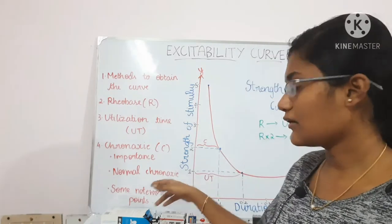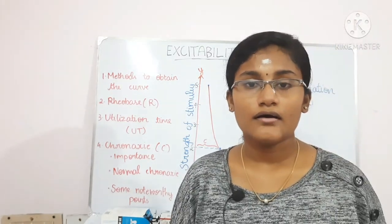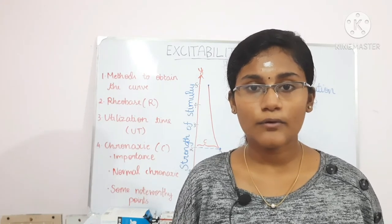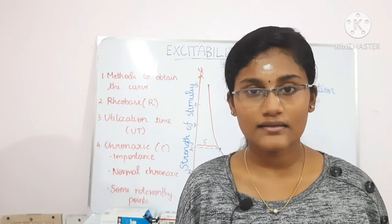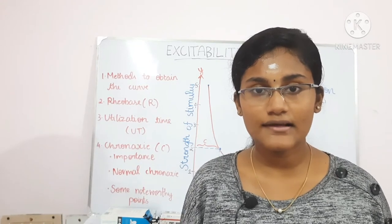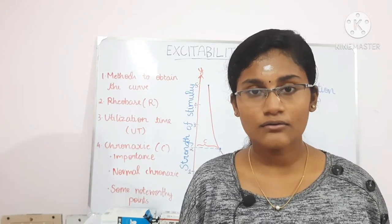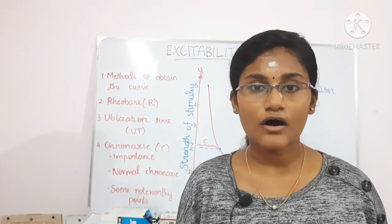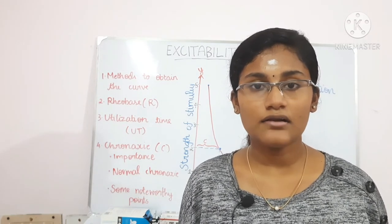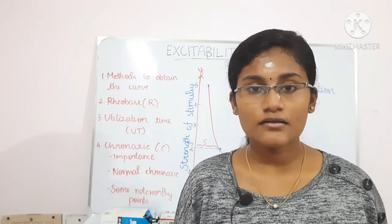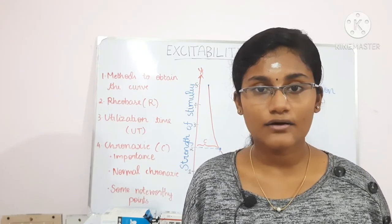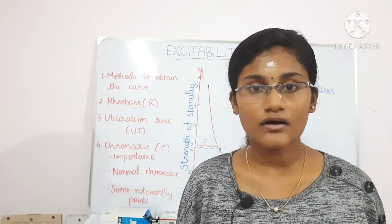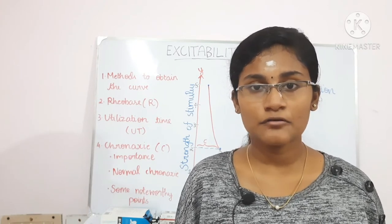In a normal human skeletal muscle cell, it takes about 0.08 to 0.32 milliseconds to react to double the rheobase strength. In a frog, it takes 3 milliseconds to react to double the rheobase strength. So the frog has a higher chronaxi than the human skeletal muscle, meaning the frog's excitability is lower than that of the human skeletal muscle.